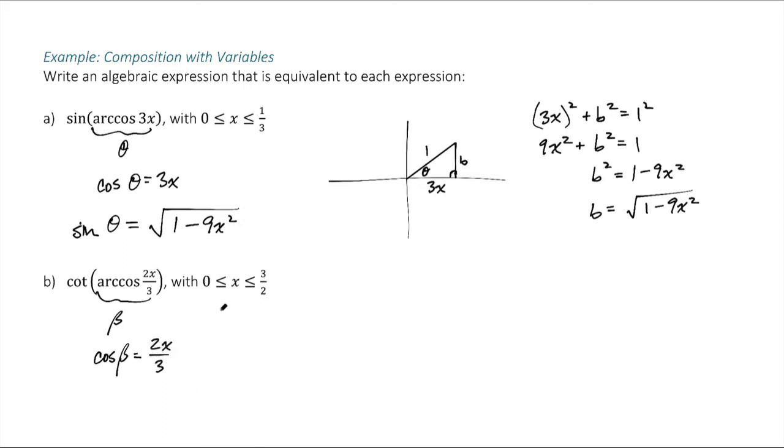Because x is between 0 and 3 halves, this thing here is between 0 and 1. And if the cosine is between 0 and 1, then I know I'm somewhere here to the right, and of course the arc cosine can only give me an angle between 0 and pi over 2, so I have to be in this first quadrant.